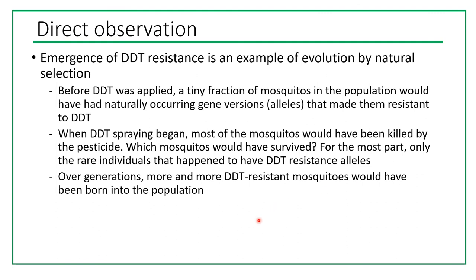The emergence of DDT resistance is an example of evolution by natural selection. Before DDT was applied, a tiny fraction of mosquitoes had naturally occurring gene versions — alleles — that made them resistant. When DDT spraying began, most mosquitoes were killed, and only the rare resistant individuals survived. Over generations, more and more DDT-resistant mosquitoes were born into the population. That covers some of the key evidence for evolution, and hopefully it was helpful.